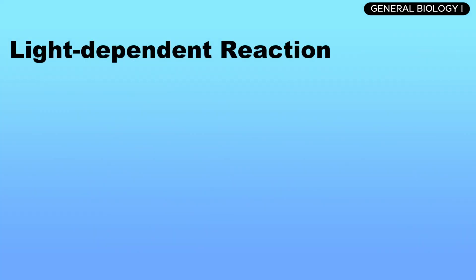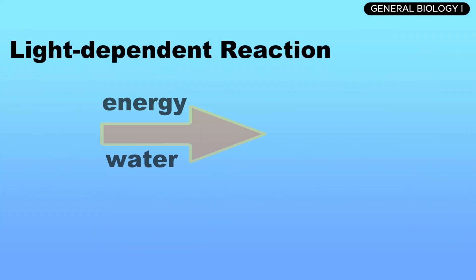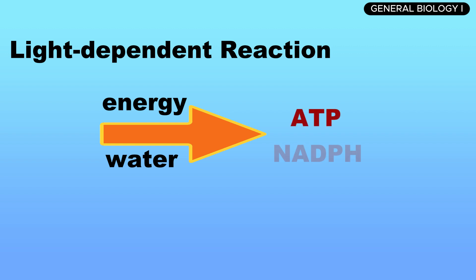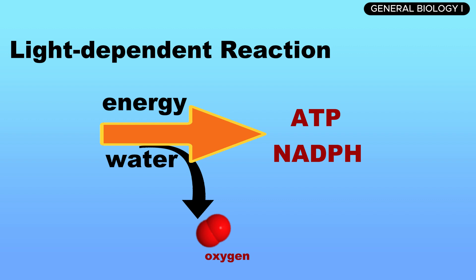At the end of the light-dependent reactions, the cell has produced ATP and NADPH, both of which will fuel the next stage — the light-independent reactions — to synthesize glucose.